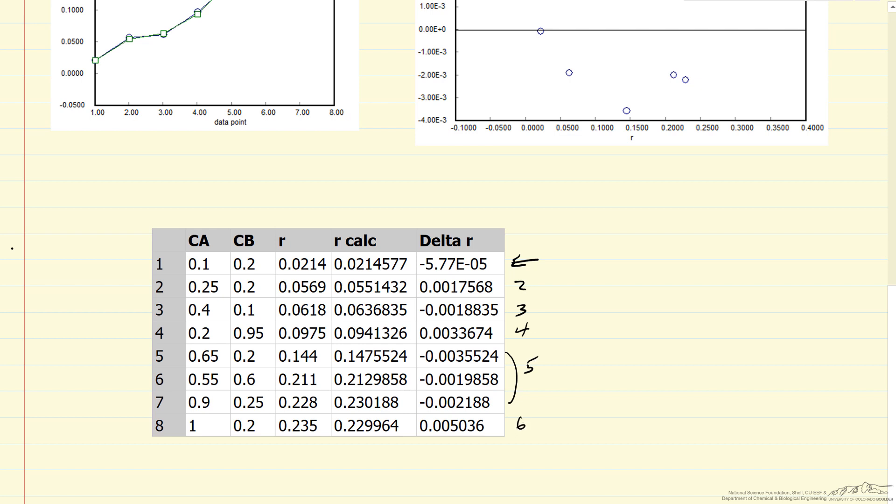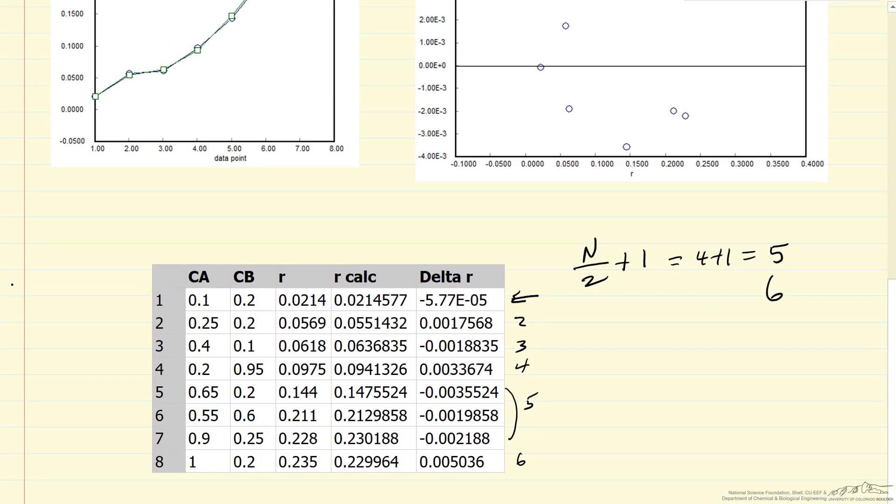We expect, for the data, that the number of measurements over two plus one is about how many runs we expect if it's a random distribution. So this is eight over two plus one equals five. We have six, again an indication that this is a reasonable fit. There's no pattern in the residuals.